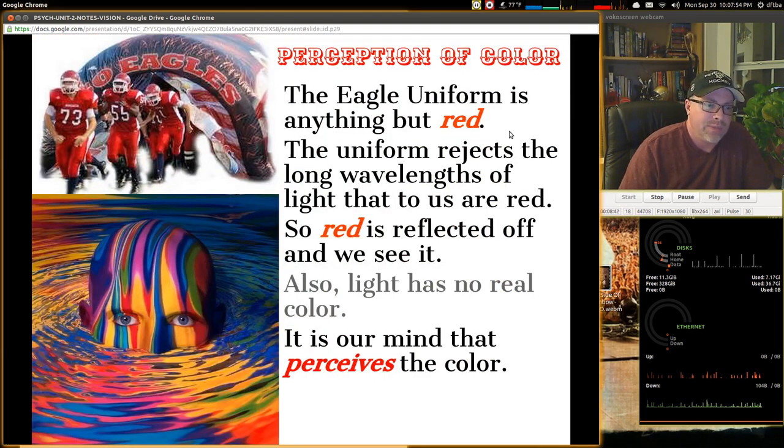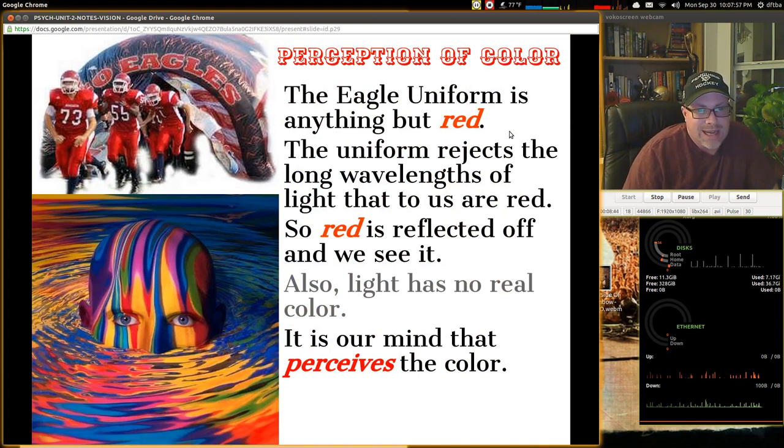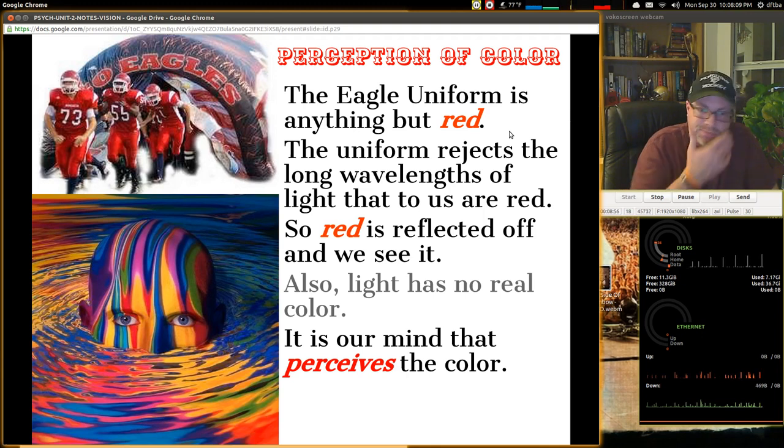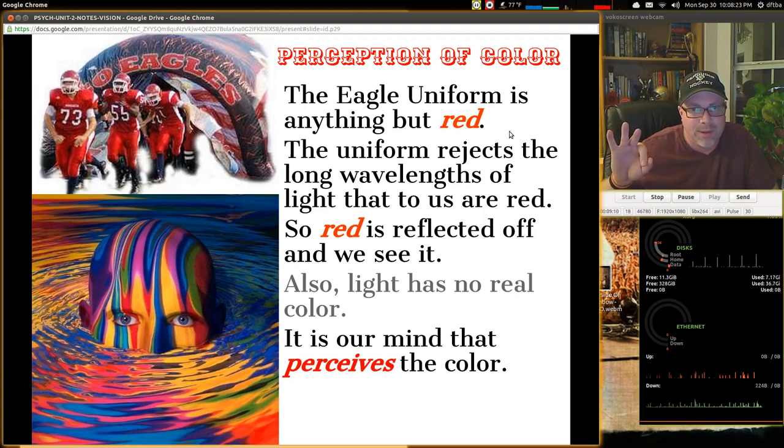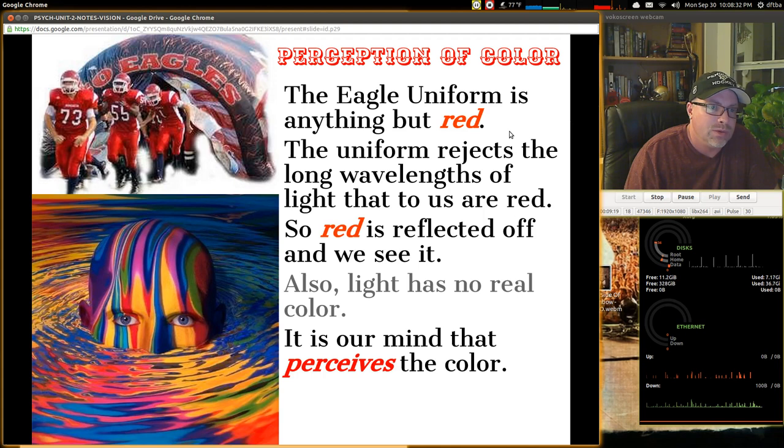But how do we see that color? The perception of color is a strange thing. The eagle uniform is anything but red. The uniform rejects the long wavelengths of light that to us are red. So red is reflected off, and we see it. It's the light being reflected off. Also, light has no real color. It is our mind that perceives the color being there. And this seems like bull crap for a lot of people. Like, there's no way. It's just that color. It isn't. Your brain is creating it.